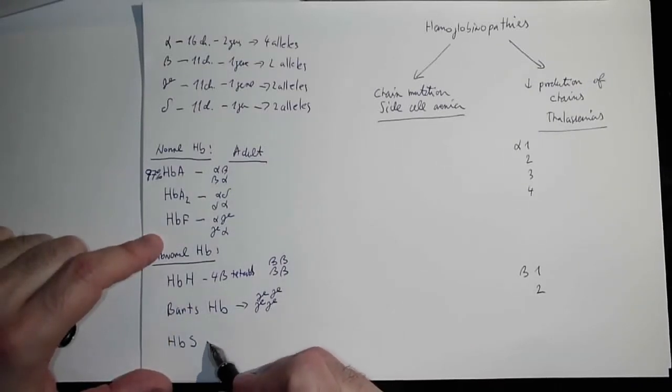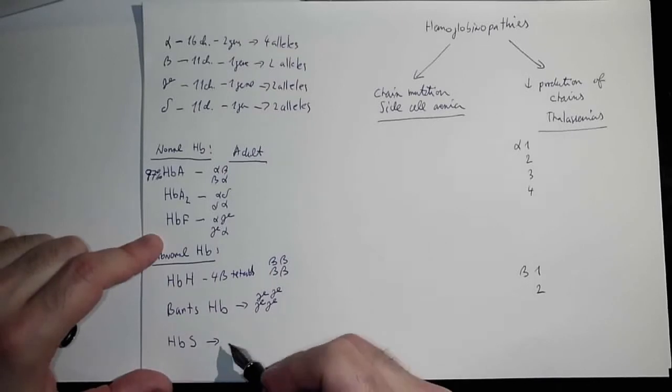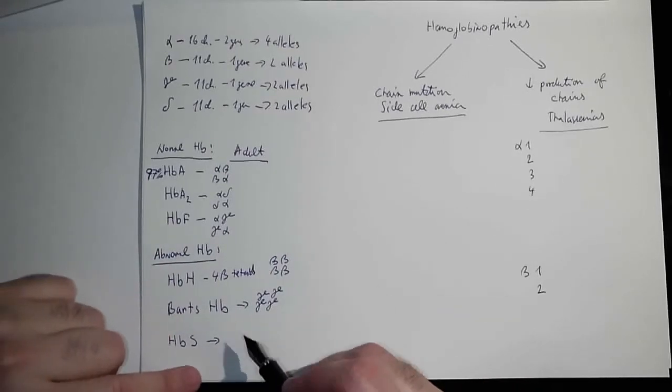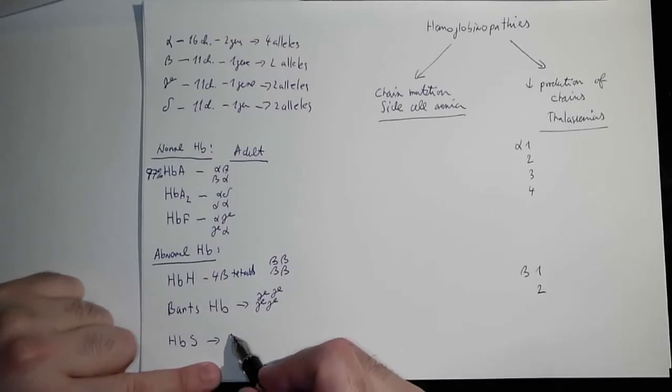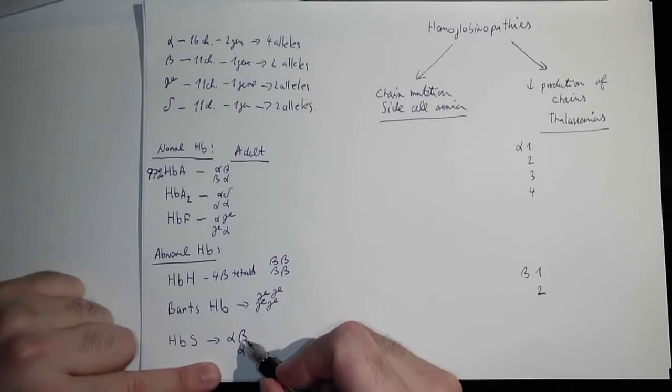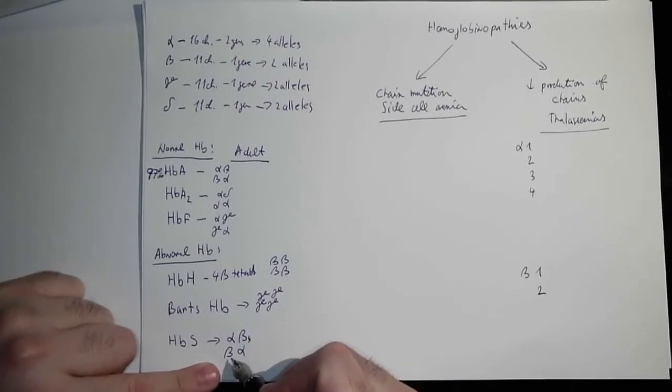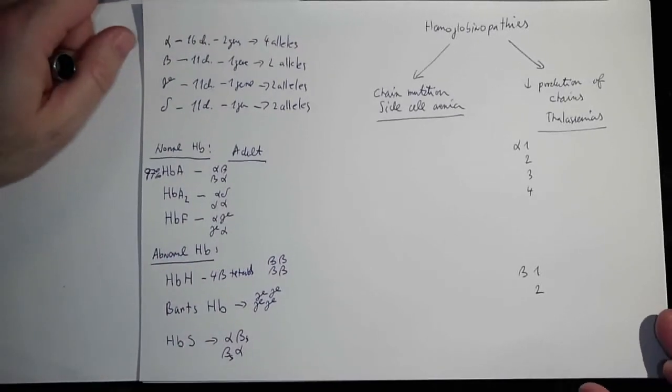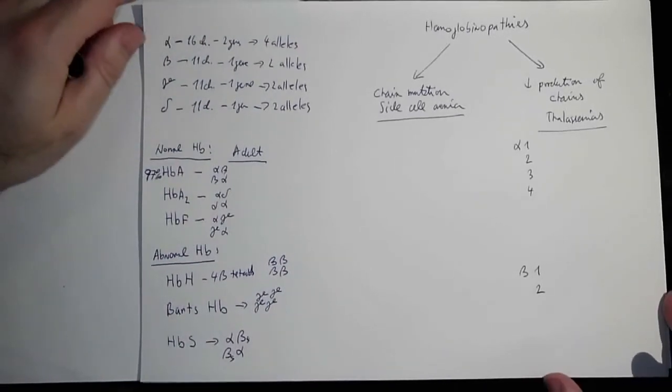Then there is hemoglobin S, which is hemoglobin that is present in sickle cell anemia, and it has two normal alpha chains and then mutated beta chains.